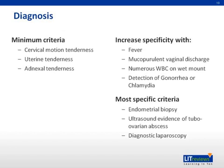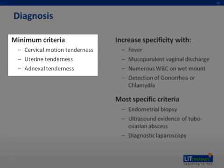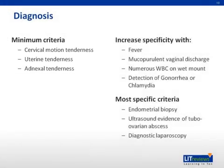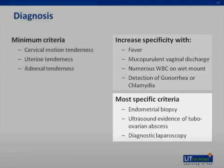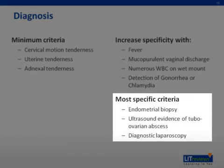Treatment should be initiated if patients have at least one of the minimum criteria, which are cervical motion tenderness, uterine, or adnexal tenderness. Further workup for alternative etiology of pain should not delay treatment. According to the CDC, other criteria that may increase specificity for the diagnosis of PID include fever, mucopurulent vaginal discharge, numerous white blood cells on a wet mount, and or detection of gonorrhea or chlamydia. The most specific tests for diagnosis include endometrial biopsy, ultrasound evidence of tubo-ovarian abscess, and or diagnostic laparoscopy.